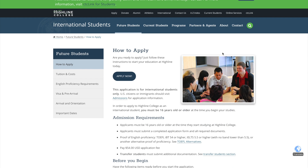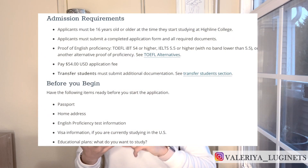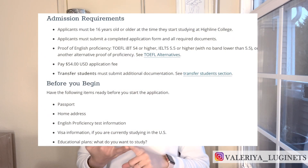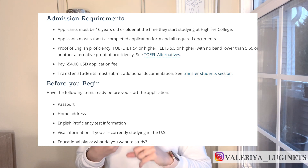On the 'How to Apply' page it will show you a list of steps you have to complete in order to apply for that college. It will also list the requirements, what you need to do before you begin your application, and it will walk you through the whole application process.